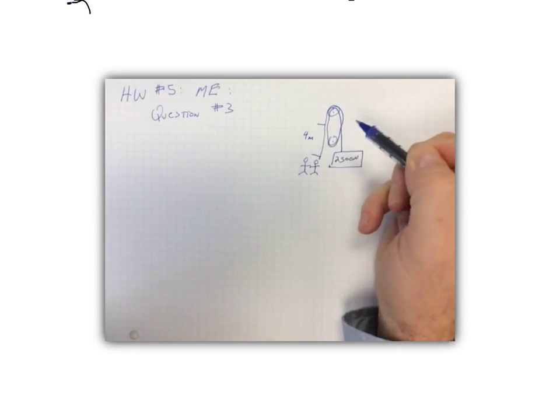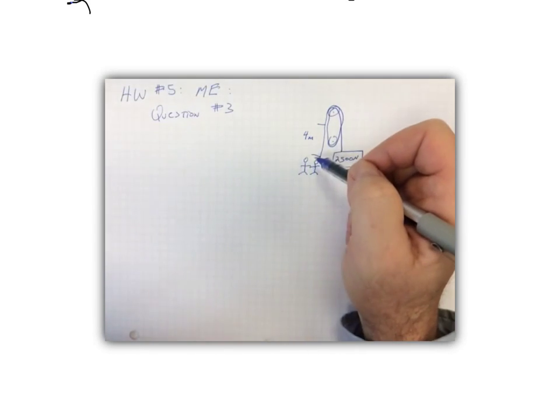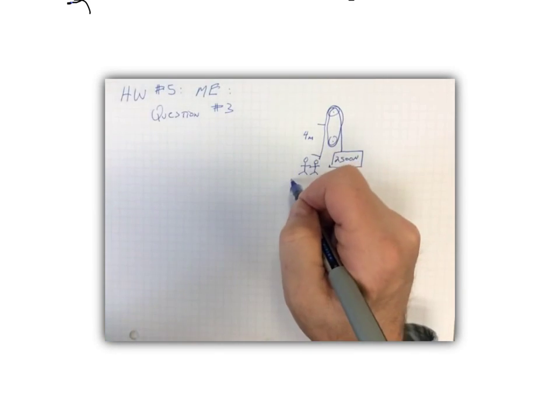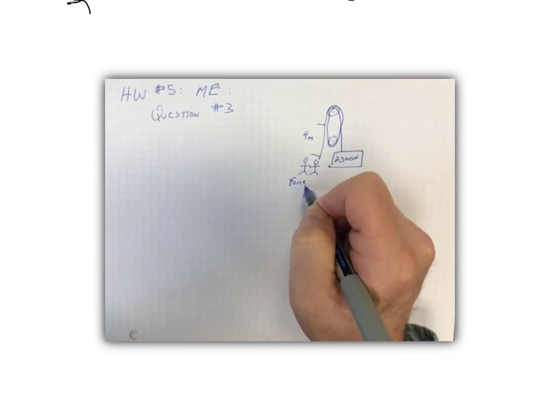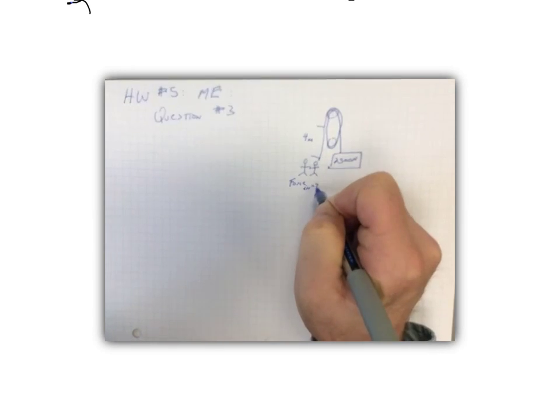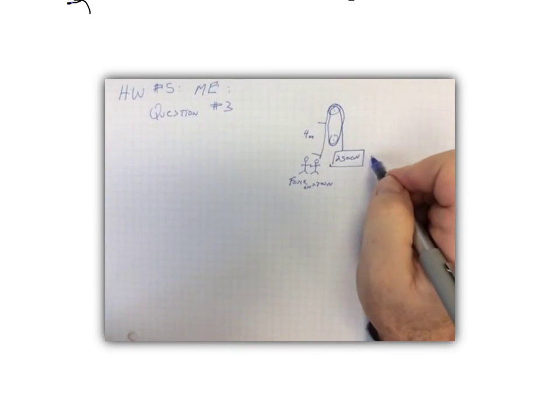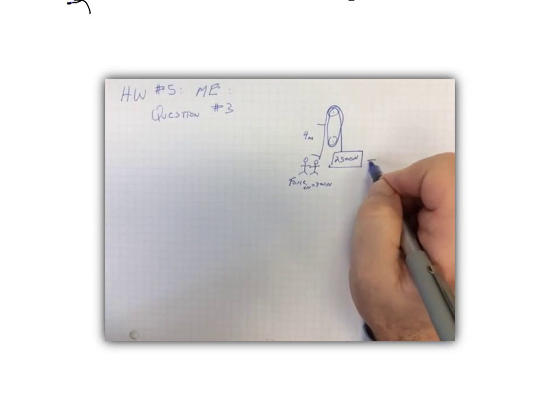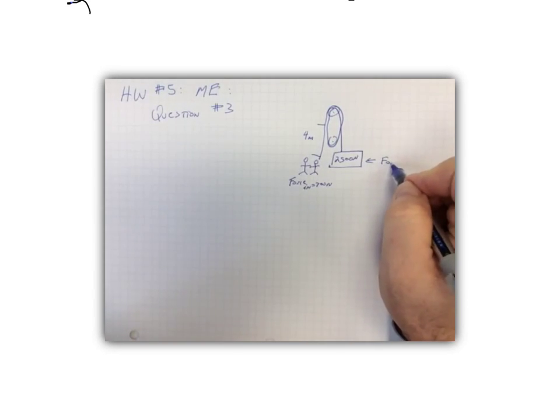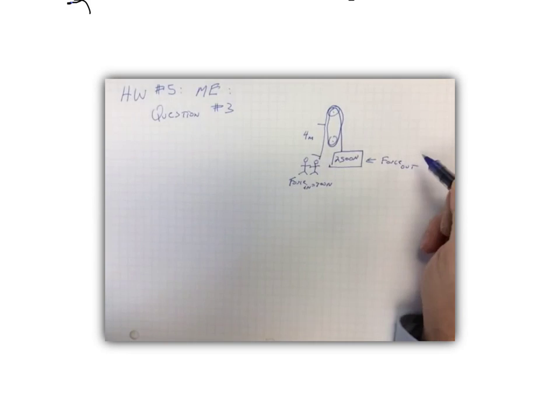So let's say here's our four meters of rope that they're gonna take in. How much force are they gonna pull with? They're gonna use a force of 700 newtons. So now we know the force in equals 700 newtons. Therefore, the weight of the object must be the force out.